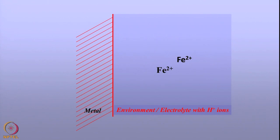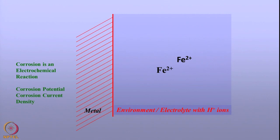There is a flow of current occurring on the metal surface along with the reaction. So the corrosion is electrochemical in nature. Because the charges are interacting on the interface, we can use potential to control the flow of charges in either direction.